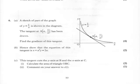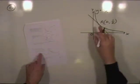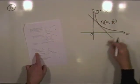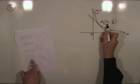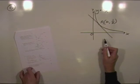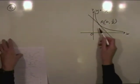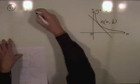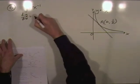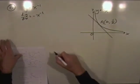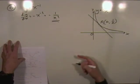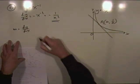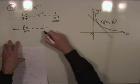Question six involves the reciprocal graph y = 1/x. Point A has a random x-coordinate a, so the y-coordinate is 1/a. To find the gradient of the tangent, differentiate: y = x⁻¹ gives dy/dx = −x⁻², so the gradient at point A is −1/a².